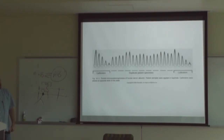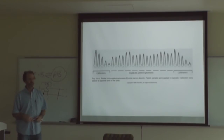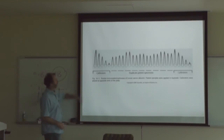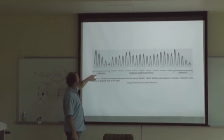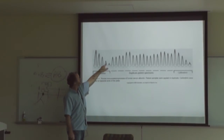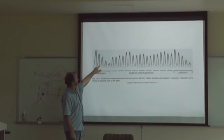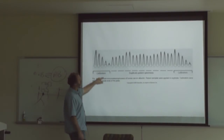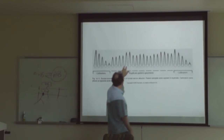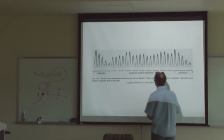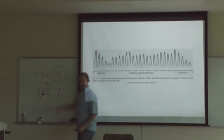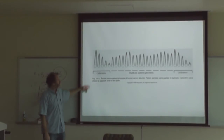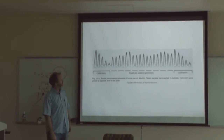Another quantitative method is rocket immunoelectrophoresis, where you electrophorese into a gel containing antibody. Calibrators with increasing amounts of antigen are compared to duplicate samples. You measure the peak height of those rockets, and that tells you how much antigen is in those samples.